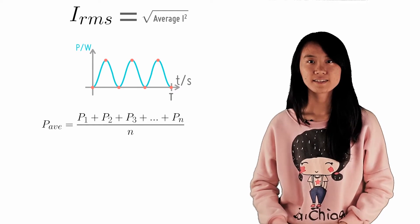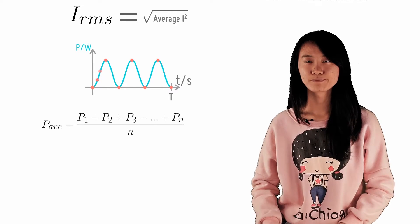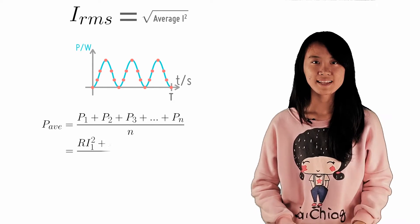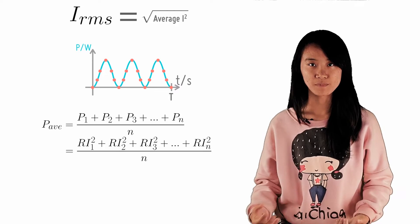By definition, we then average these values to get the average power. Of course, we can increase the number of points taken to make the average power more and more accurate.